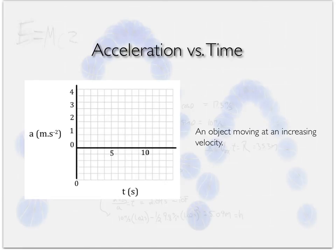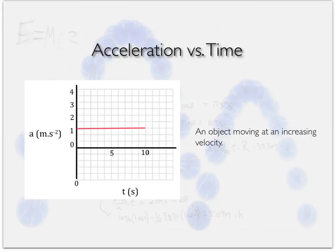An object moving at an increasing velocity is accelerating. On an acceleration-time graph, that looks like a positive horizontal flat line — say at one meter per second squared. It doesn't look like increasing velocity on this graph, but remember: acceleration is the rate of change of velocity. That means for each second that goes by, the object increases its velocity by one meter per second. You cannot have a changing acceleration on these graphs — it's always a flat horizontal line.